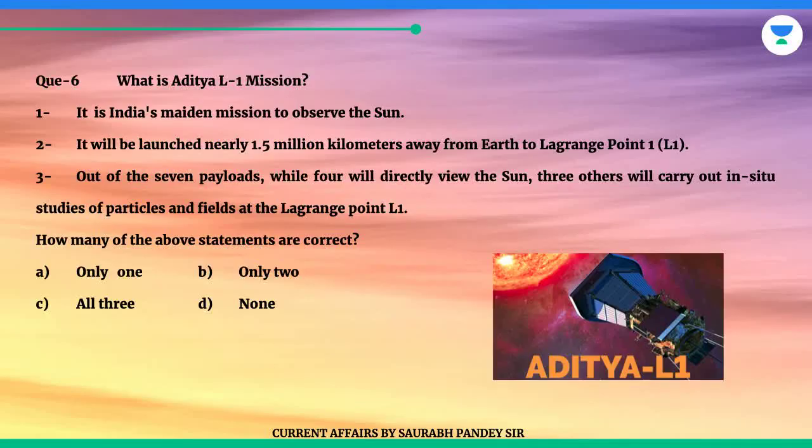Question 6. What is the Aditya L1 mission? Statement 1: It is India's maiden mission to observe the sun. Statement 2: It will be launched nearly 1.5 million kilometers away from Earth to Lagrange point 1, L1. Statement 3: Out of the 7 payloads, while 4 will directly view the sun, 3 others will carry out in-situ studies of particles and fields at Lagrange point L1.